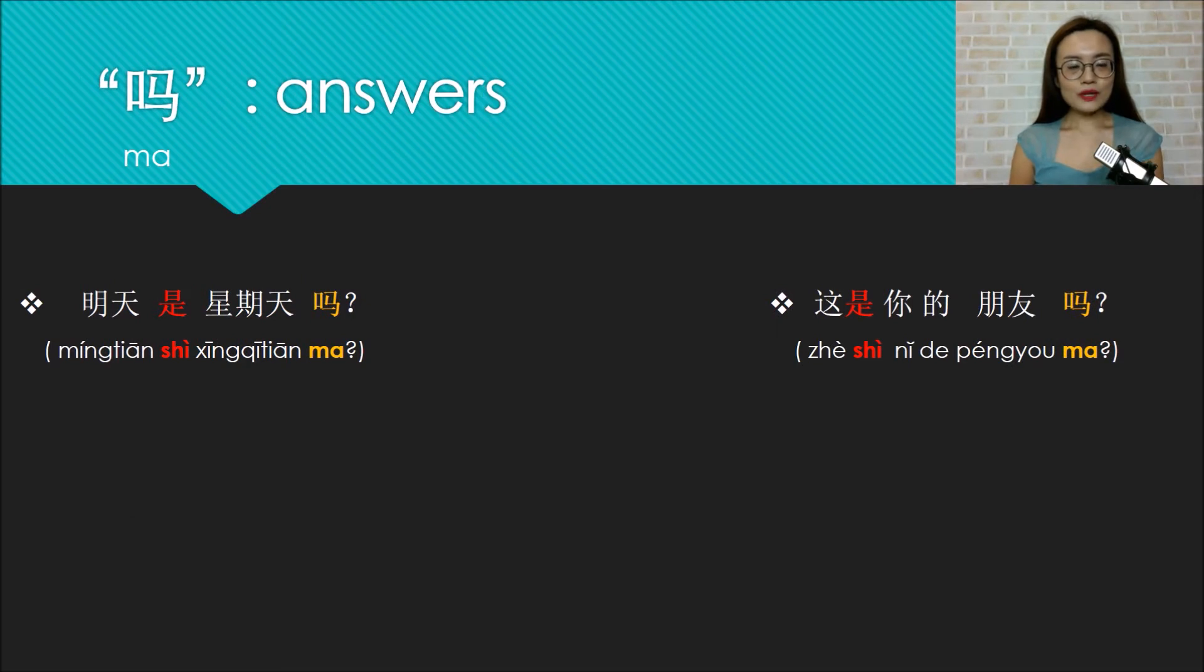In this part, I want to emphasize on how to answer this yes or no question. Look at these two examples. Mingtian shi xinqitian ma? Is tomorrow Sunday? Zhe shi ni de pengyou ma? Is this your friend? The verbs in these two sentences are both shi. So when you answer this kind of sentence, you can just say shi, or the negative answer bu shi.